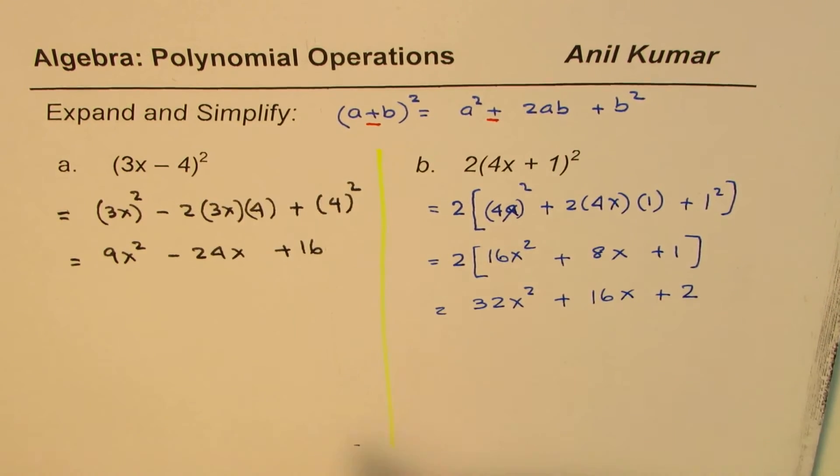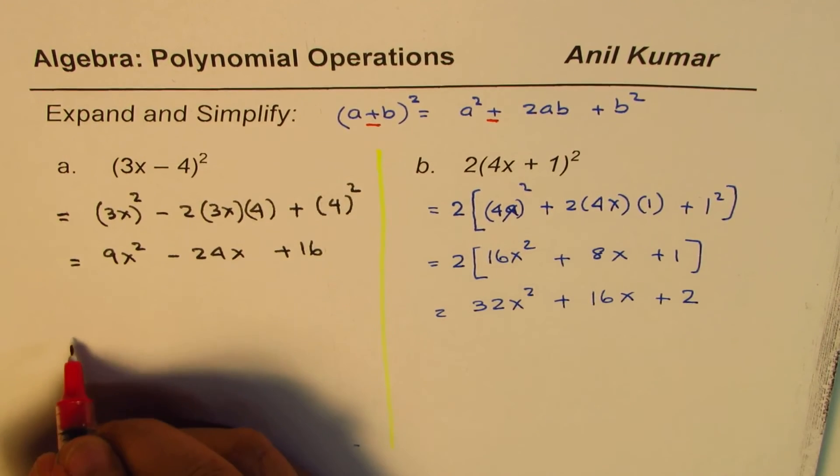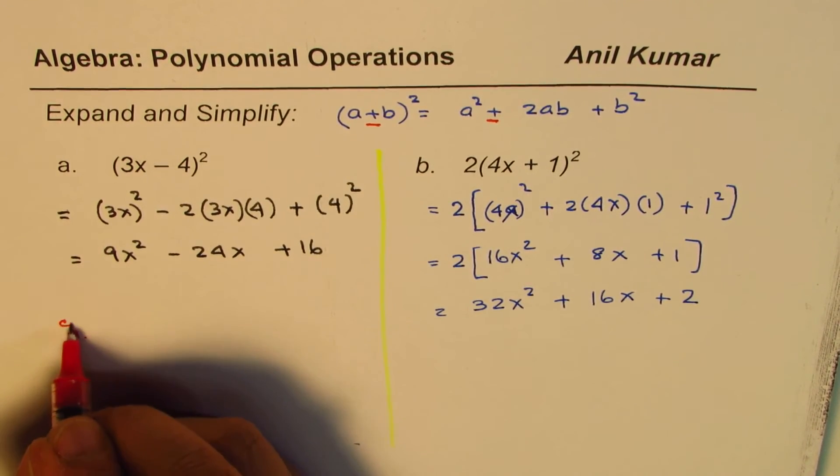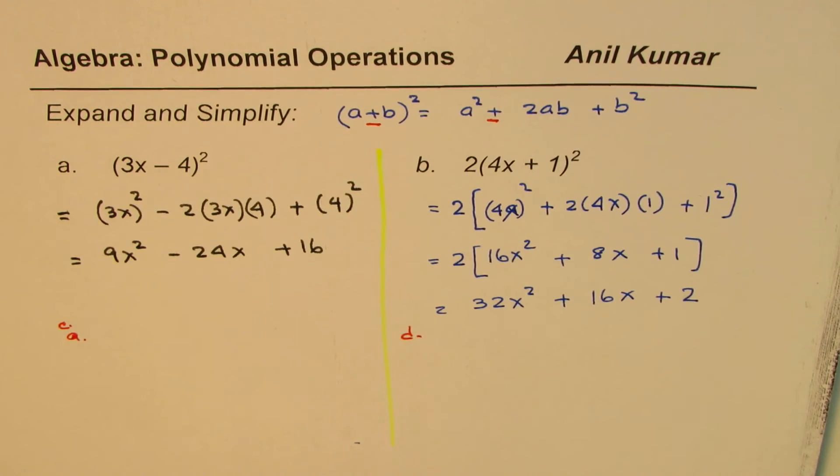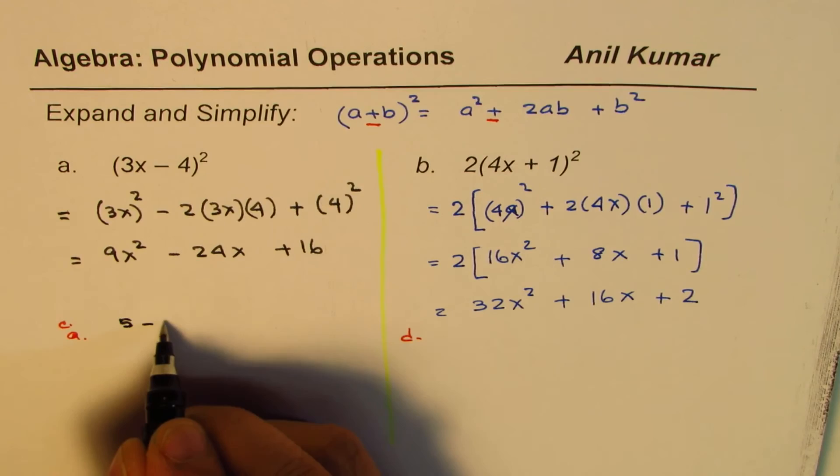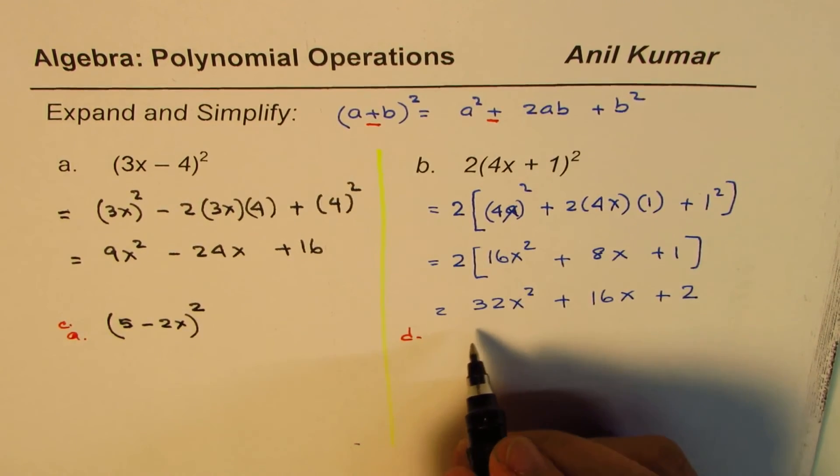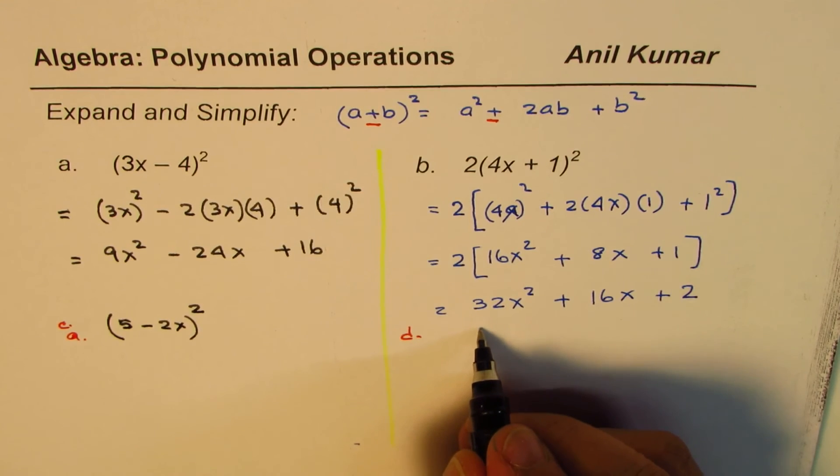Now here are two practice questions for you which you should do on your own. So let me call this c and d. Right, c and d. So the questions are (5-2x)² and the other one...